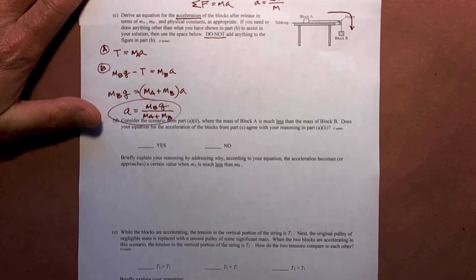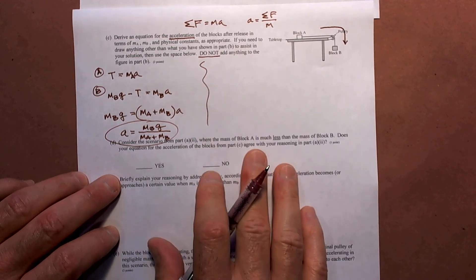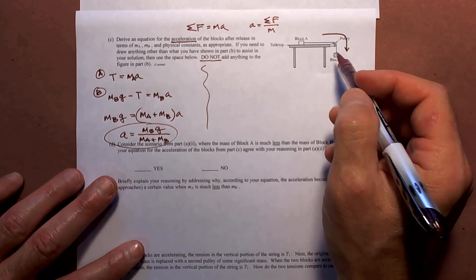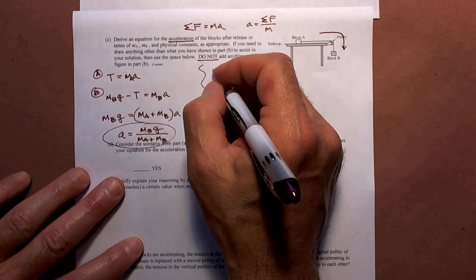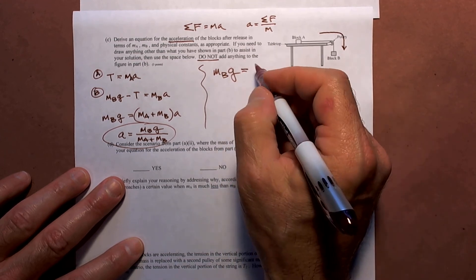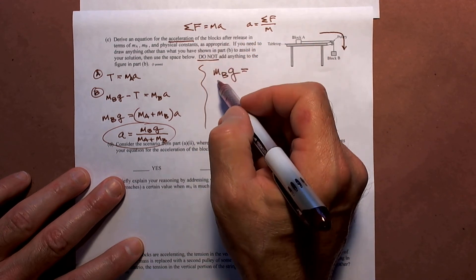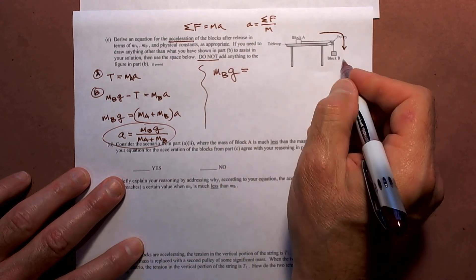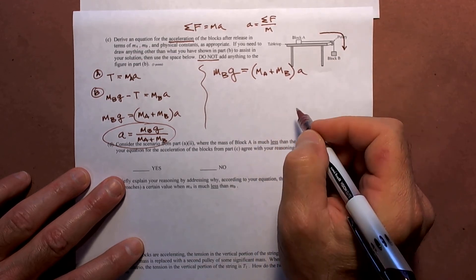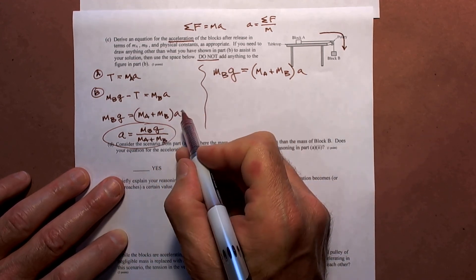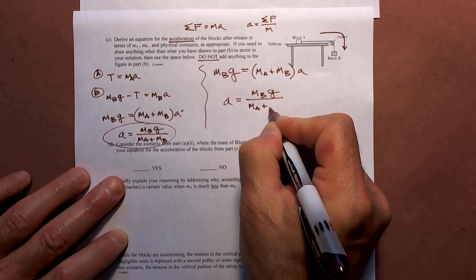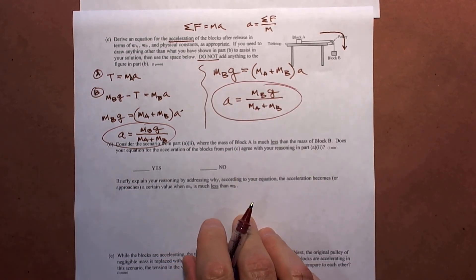For taking it as a system — and you only need to do one of these — the sum of the forces equals MA. The only force that acts in the direction of acceleration on the system of A and B is MB times G. That's the net force on the system, and it equals the total mass that moves: MA plus MB, times the acceleration. Notice this equation is the same as before: acceleration equals mBG over MA plus MB, the net force divided by the mass of the system. Either way, you end up with the same expression.